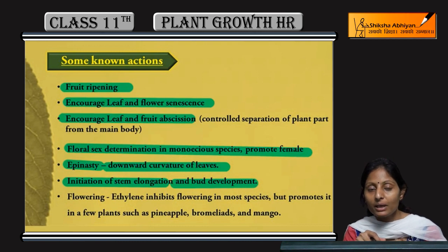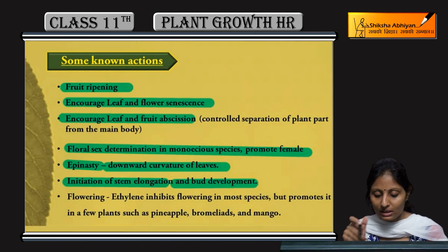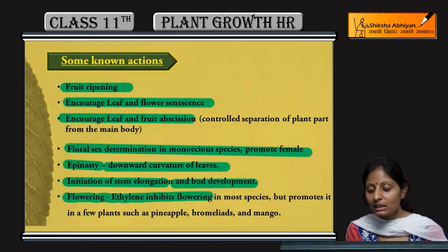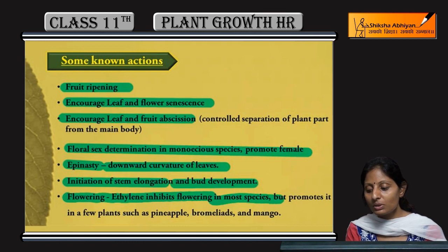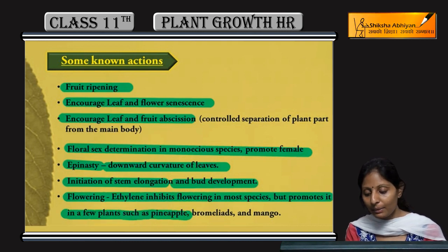Ethylene also initiates stem elongation and bud development — it participates in the development of buds and elongation of cells and stems. It also has a role in flowering.